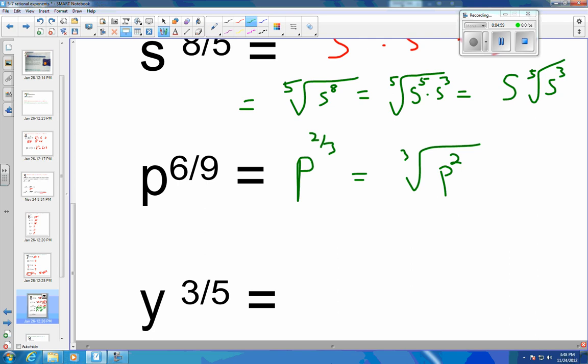And the last one on this page is 5/3. So this is going to be the 5th root of y to the 3rd. And I know 5/3 is in its reduced form, so I'm going to reduce my fraction and then I'm going to put it into the radical form.